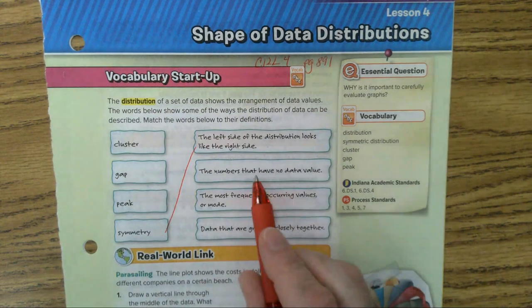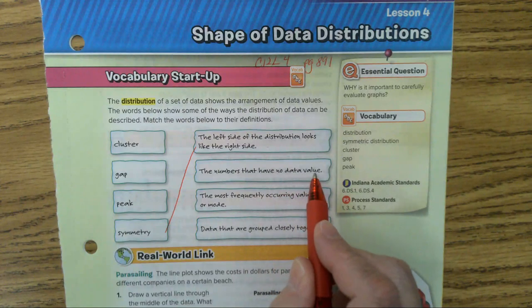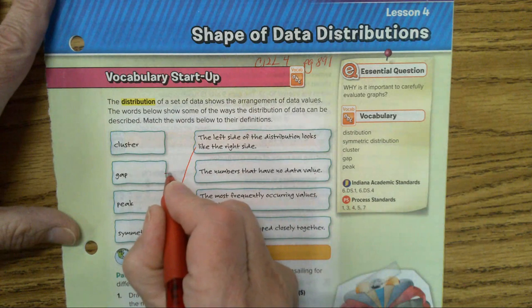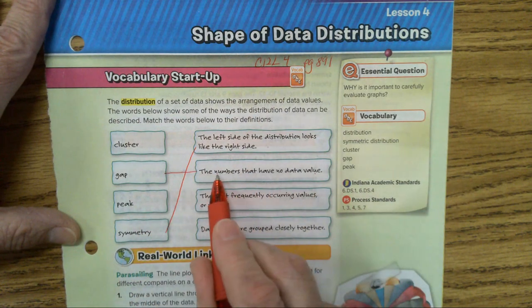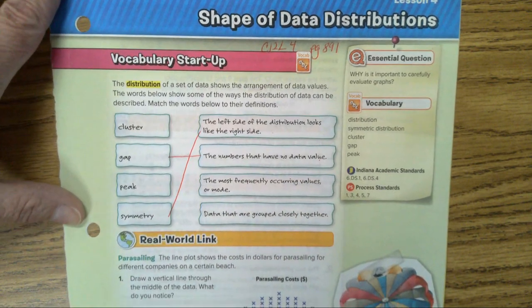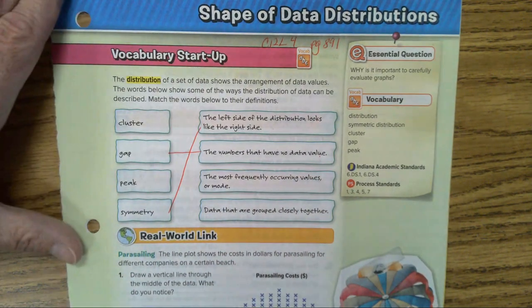The numbers that have no data value. That's a gap. If you don't have anything in it, it's called a gap. So the numbers that have no data value. So you know when we did the histogram and it was empty, that could be referred to as a gap.